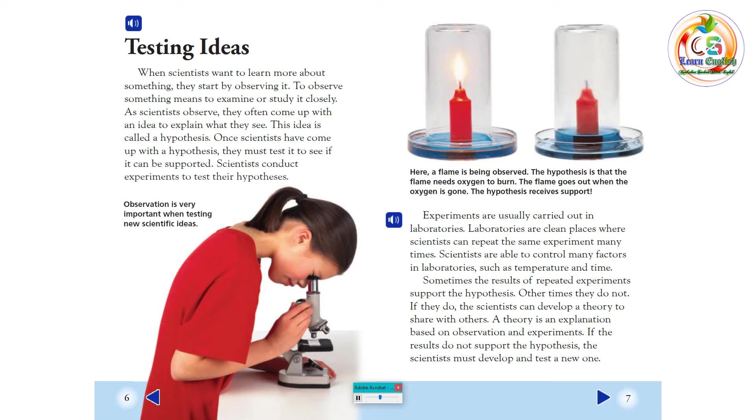such as temperature and time. Sometimes, the results of repeated experiments support the hypothesis. Other times, they do not. If they do, the scientists can develop a theory to share with others. A theory is an explanation based on observation and experiments. If the results do not support the hypothesis, the scientists must develop and test a new one.